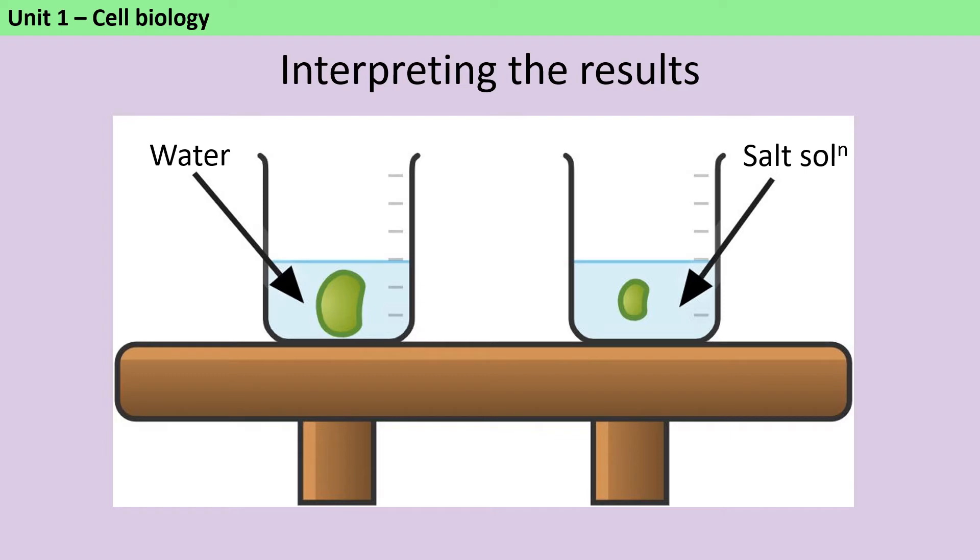So in the left-hand situation, the water is obviously a lot more dilute than the tissue inside of the cells of the piece of vegetable. And so because we know that in osmosis, water will move from a dilute solution to a concentrated solution, that water has moved into the cells. And so the cells have expanded, they've become more turgid, and they've grown larger. And so therefore, the left-hand piece of vegetable matter has got bigger and heavier.